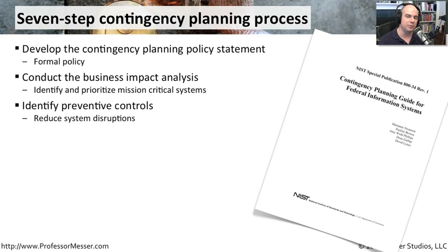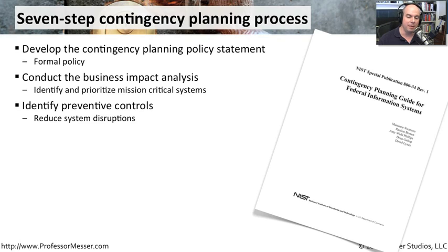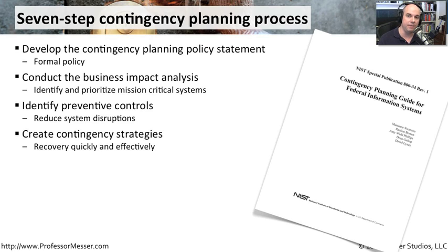Then we can look at ways to prevent some of these problems from occurring in the first place — taking a big section of potential disasters and mitigating them, ensuring they'll never happen in our organization. Maybe we're buying redundant systems or creating different ways of backing up existing systems. We also need to think about contingency strategies: if a problem does occur, how can we recover as quickly as possible?